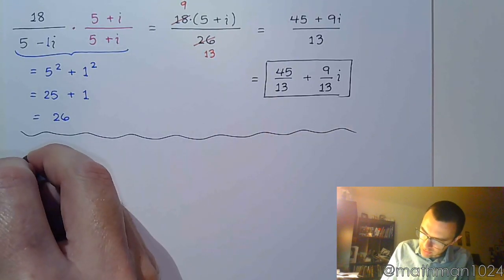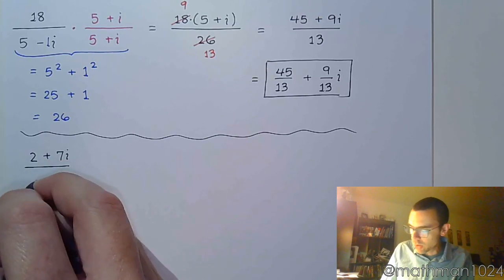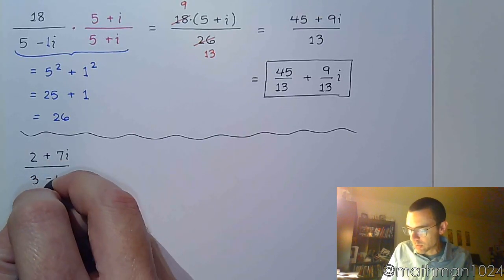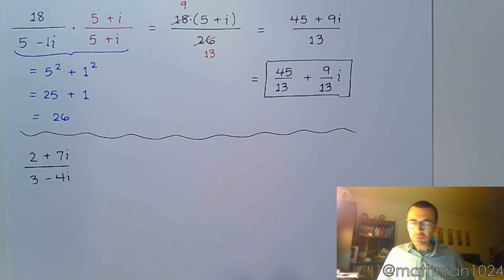Let's do this last example. Let's do 2 plus 7i over 3 minus 4i. Now, again, we're not worried so much about what happens in the numerator. The guy's just going to come along for the ride. It's all about getting rid of the imaginary pieces in the denominator.